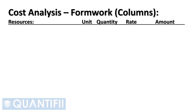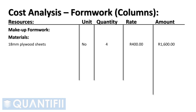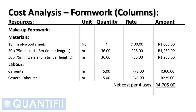Moving on to the rate analysis for column formwork. We start with columns listing resources, unit, quantity, rate, and amount. The plywood sheet size is 2.44 m × 1.22 m = 2.977 m². Sheathing required is 10.176 m² ÷ 2.977 m² = 3.4, so we purchase four full-sized sheets. Timber is supplied in 6-meter lengths, so we need 36 m for studs and 36 m for whalers. A carpenter and one laborer can make up a column box in five hours, giving a make-up cost of 4,705 Rand, reusable four times.